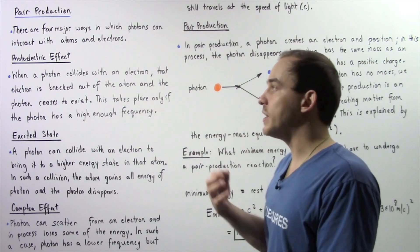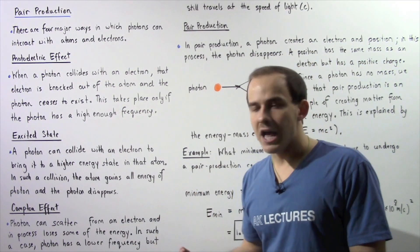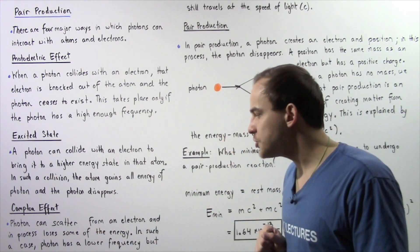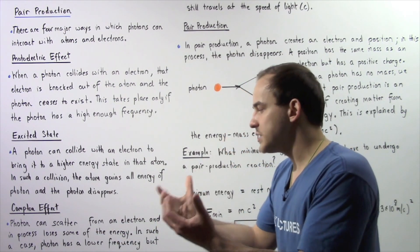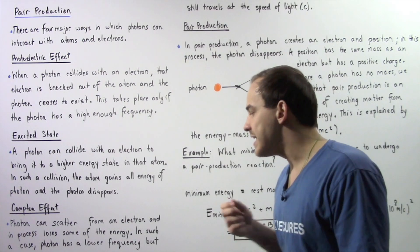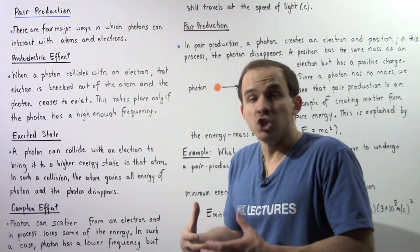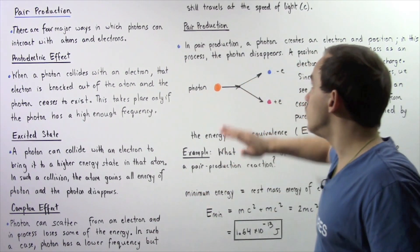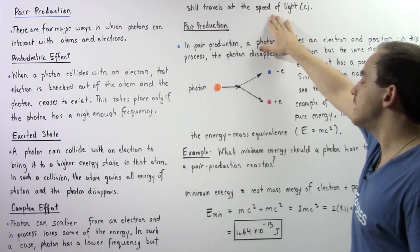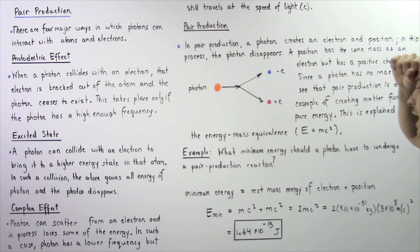In fact, photons always move at the speed of light. So in such a method of interaction, after our collision takes place, the photon has a lower frequency, a lower energy, but it's moving with the same exact speed as before, given by the speed of light.